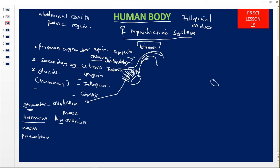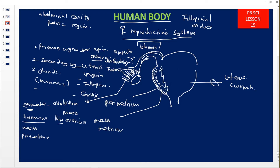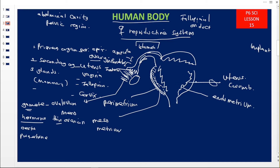The fallopian tube opens into a bag-like structure called the uterus — also called the womb. The uterus is made up of three layers: the outer layer is called the perimetrium, the second layer is called the mesometrium, and the innermost layer — which is highly vascular — is called the endometrium. Within the uterus, implantation takes place. Fertilization occurs in the fallopian tube or oviduct.